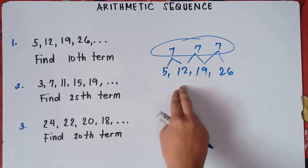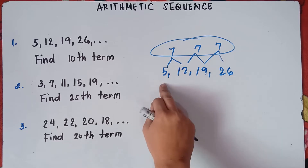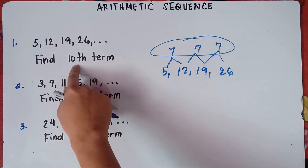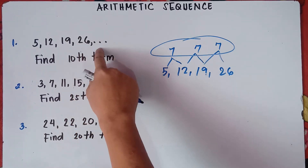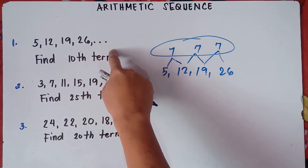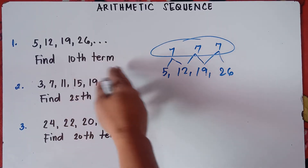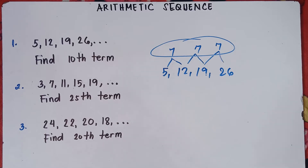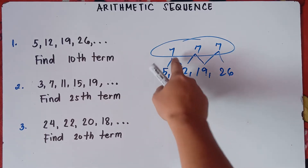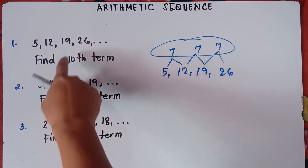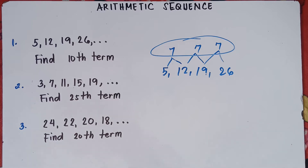So the common difference is 7. To get the value of the 10th term, you can add 7 to 26 to get 33, then 33 plus 7 is 40, and so on. It's easy if you're just finding the 10th term manually, but it's hard if the teacher asks for the 100th term or the 50th term — it will take time and you may commit mistakes in adding numbers. That's why we have the formula.